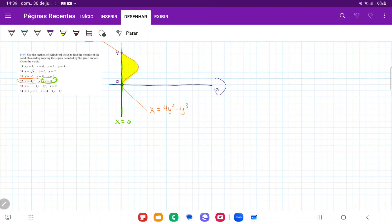And if you were confused how I got that, you can just set these equations equal to each other. So you have that 4y squared minus y cubed is equal to 0. And if you factor that out, you're going to see that y is equal to 0 or y is equal to 4.